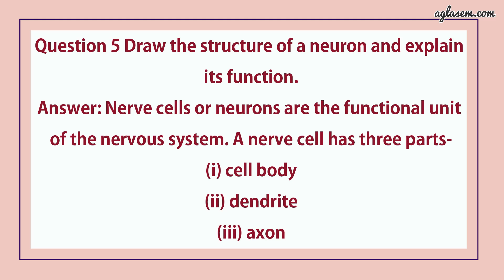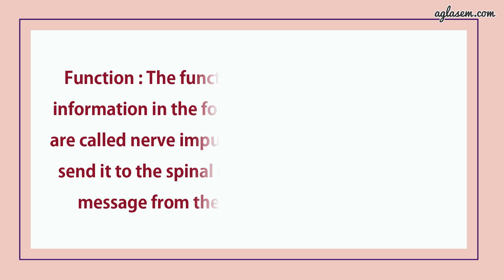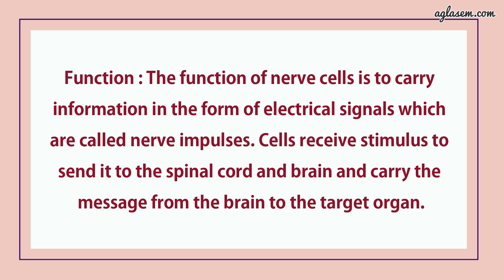Question number 5 says, draw the structure of a neuron and explain its function. Answer is: nerve cells or neurons are the functional unit of the nervous system. A nerve cell has three parts — first, cell body; second, dendrite. Its functions are: the function of a nerve cell is to carry information in the form of electrical signals, which are called nerve impulses. Cells receive stimulus to send it to the spinal cord and brain, and carry the message from the brain to the target organ.